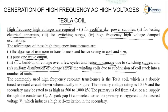The commonly used high frequency resonant transformer is the Tesla coil. The Tesla coil is generally used for the generation of high frequency high voltage, and it is a doubly tuned resonant circuit which is shown in the diagram on the next slide. The primary voltage rating is 10 kilovolt, and the secondary may be rated up to as high as 500 to 1000 kilovolt. The primary is fed either from AC or DC supply, using certain elements like capacitors and inductors.